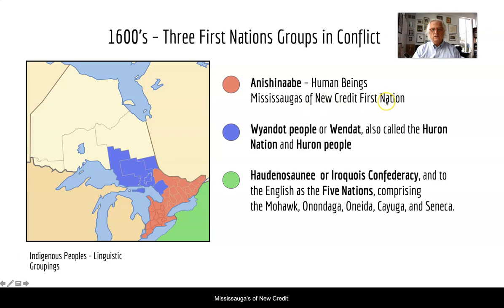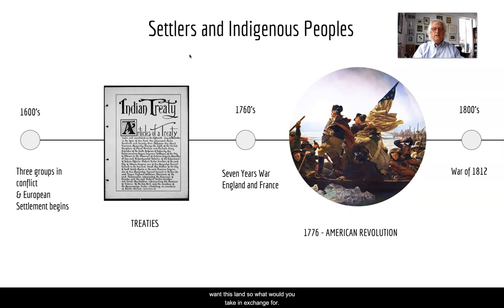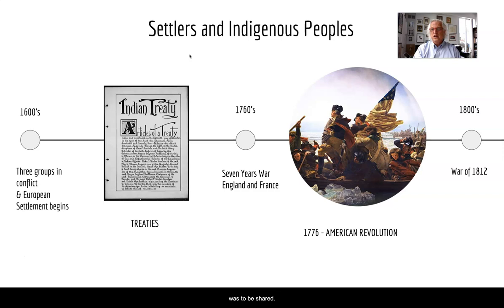So what happened? Settlement started and the concept of a treaty came into being. A treaty would say, 'We want this land — what would you take in exchange for it?' It's bartering for land, and again, not something the indigenous people really understood at the same level, because they thought land was to be shared. They didn't think of it as being owned. But these were the kinds of treaties that were created throughout this entire period.